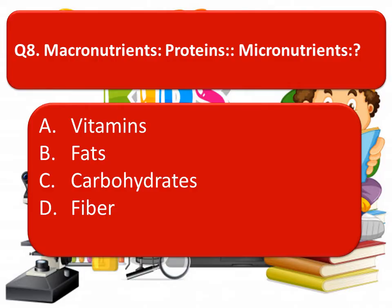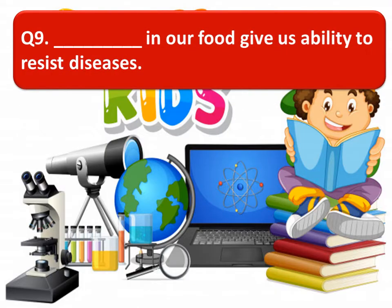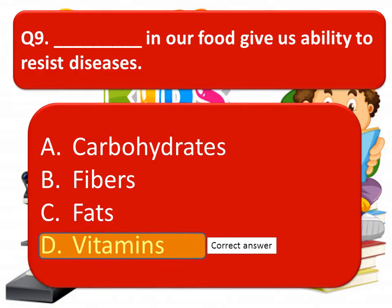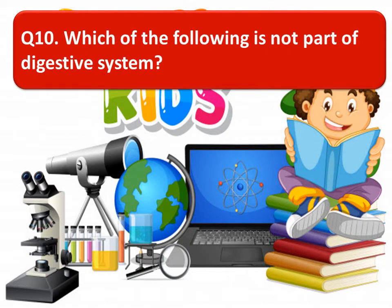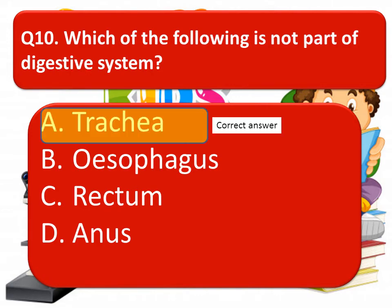The next question is: blank in our food give us the ability to resist diseases. The options are carbohydrates, fibers, fats, and vitamins. The correct option is vitamins. Which of the following is not part of the digestive system? The options are trachea, esophagus, rectum, or anus. The correct option is trachea.